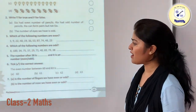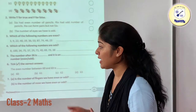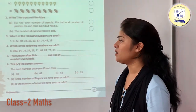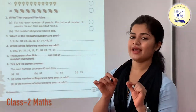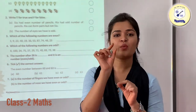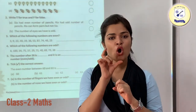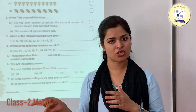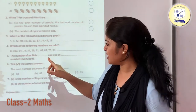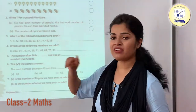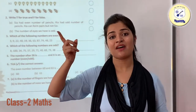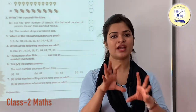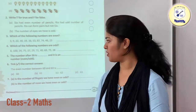The number after 26 is 27. As we know, if the ones place of a number is 2, 4, 6, 8 or 0 then that is even. Since 27 has 7 at its ones place, that is going to be your odd number.